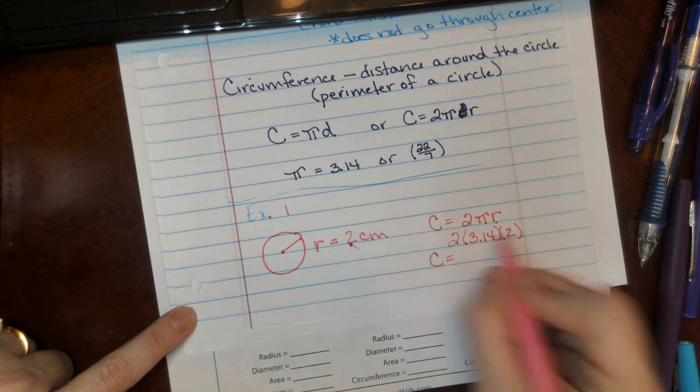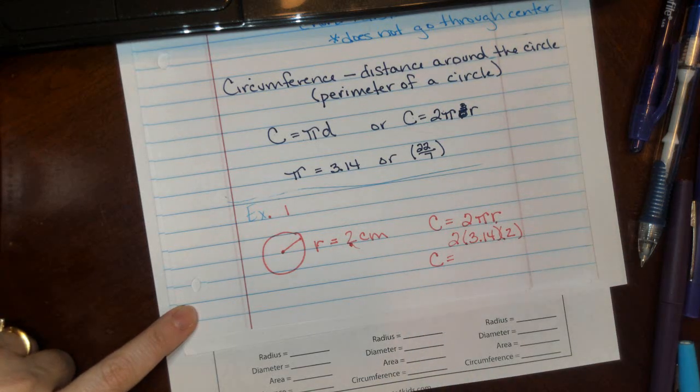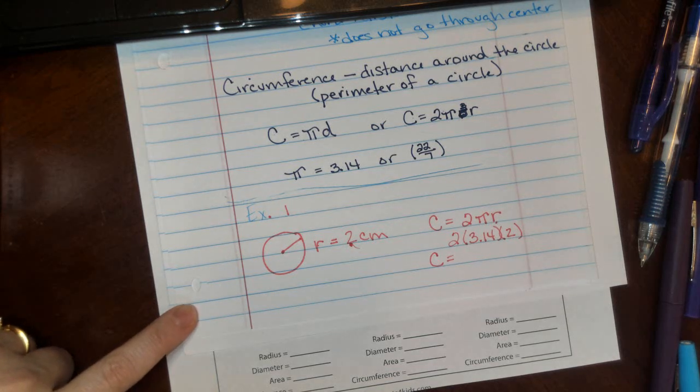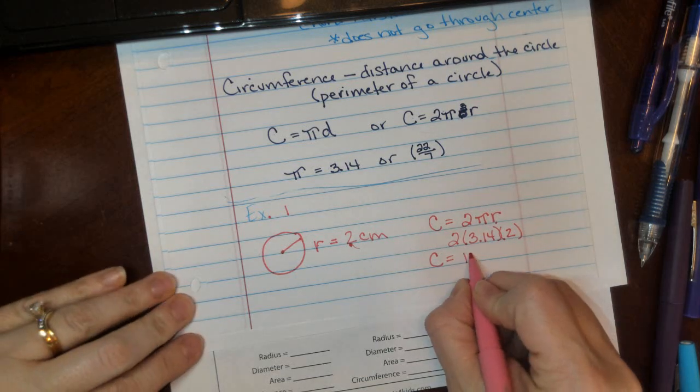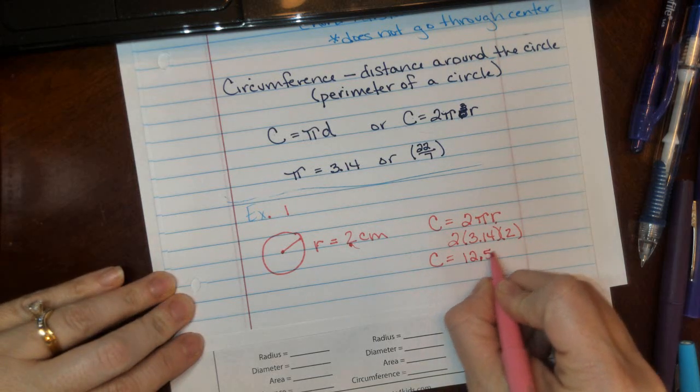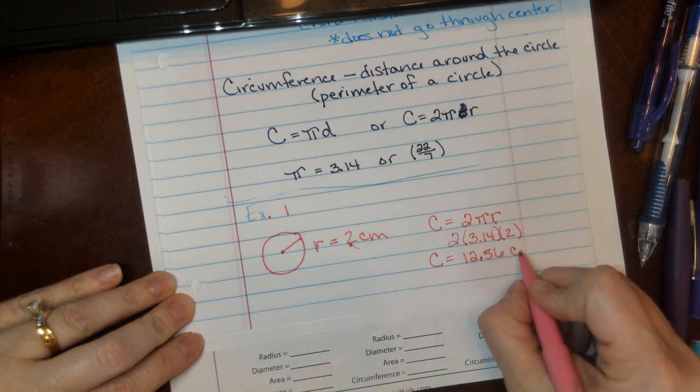So 2 times 3.14 times 2 is 12.56 centimeters.